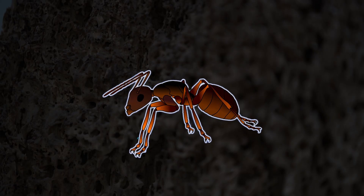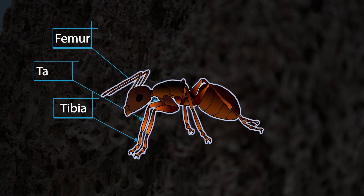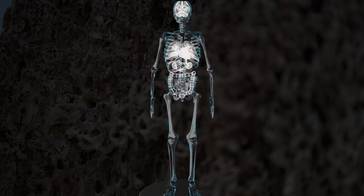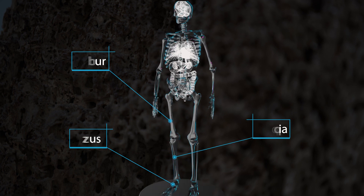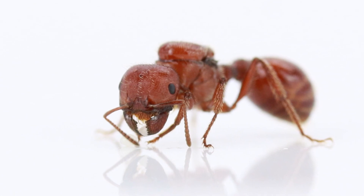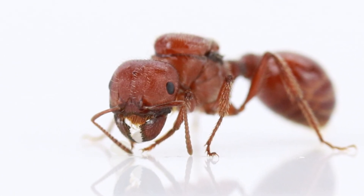The legs are divided into three main parts: tibia, femur, and tarsus. These terms should sound familiar, as they correspond to bones found in human anatomy. The legs of an ant come with powerful claws, which enable them to cling to almost any surface.